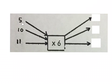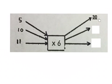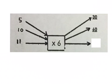So we start with the number, we times it by 6 and we get the result. So we take 5 times 6 is 30. Then we take 10 times 6 gives us 60. Then we take 11 times 6 and we get 66.